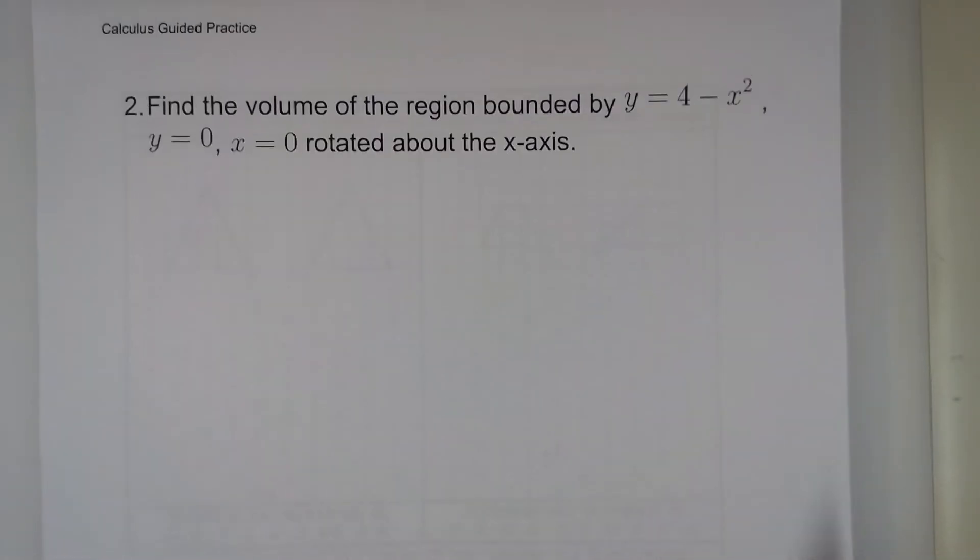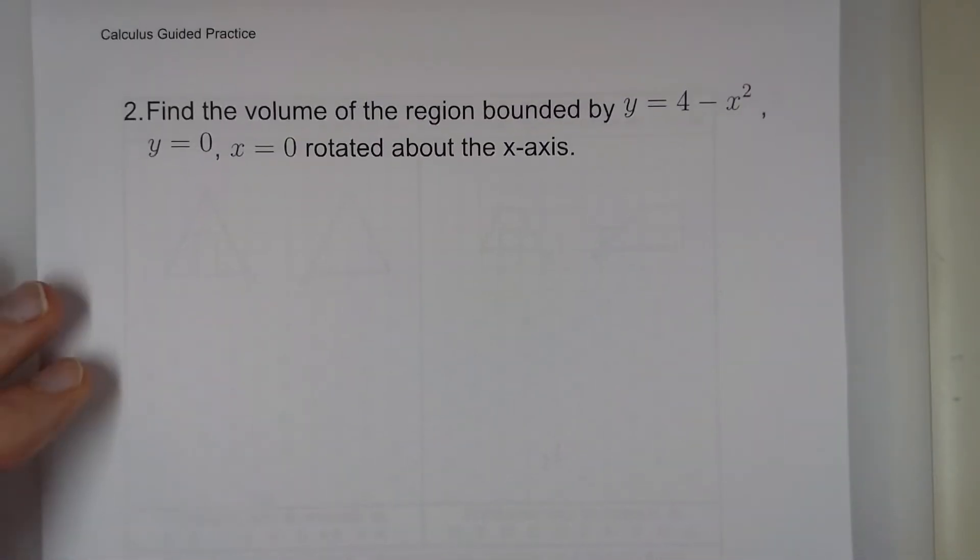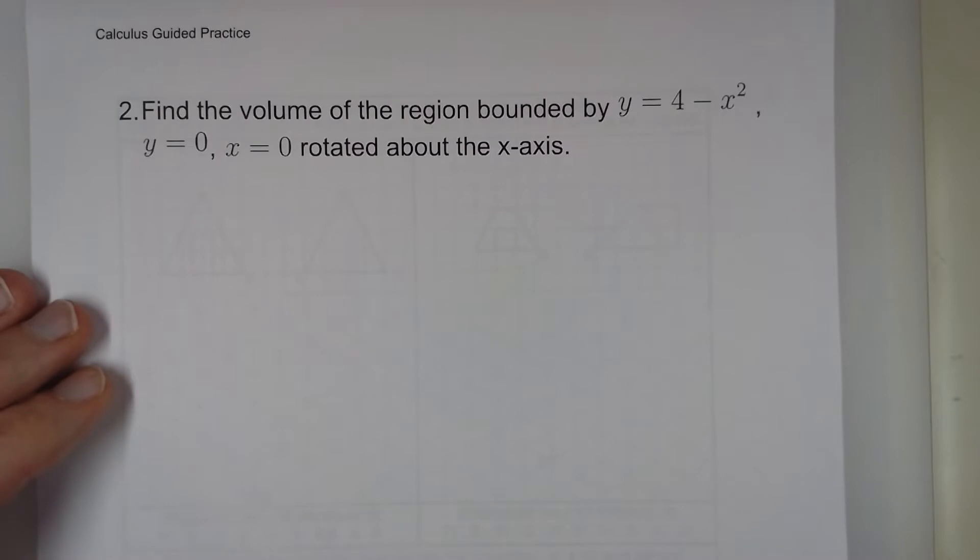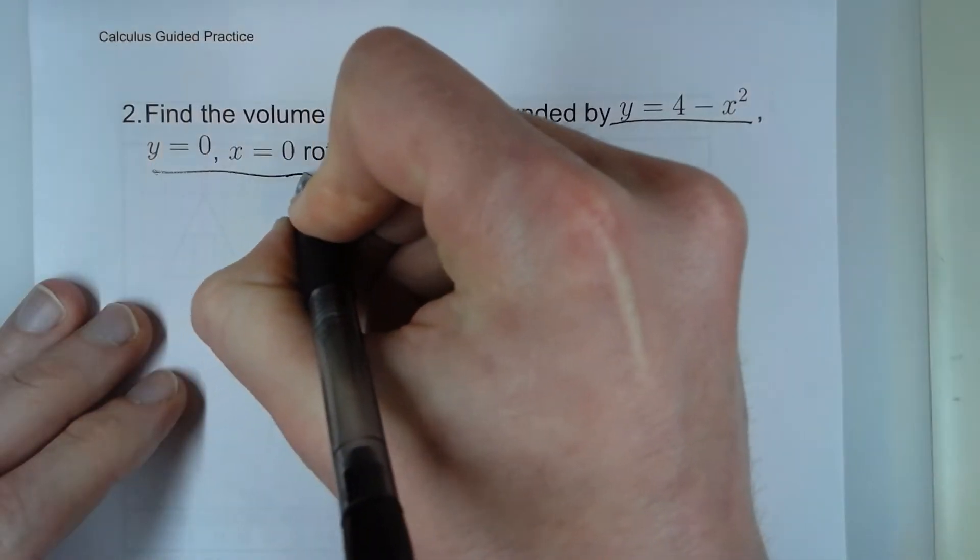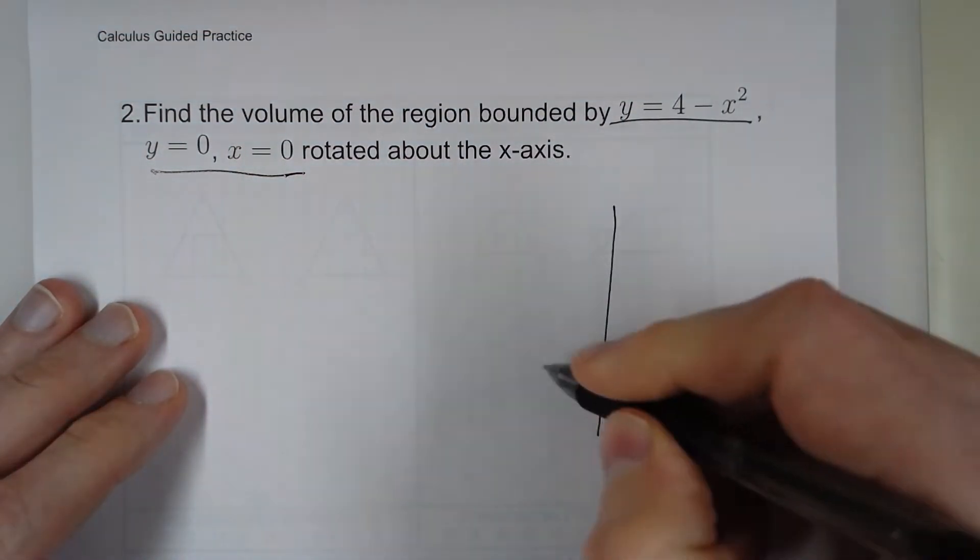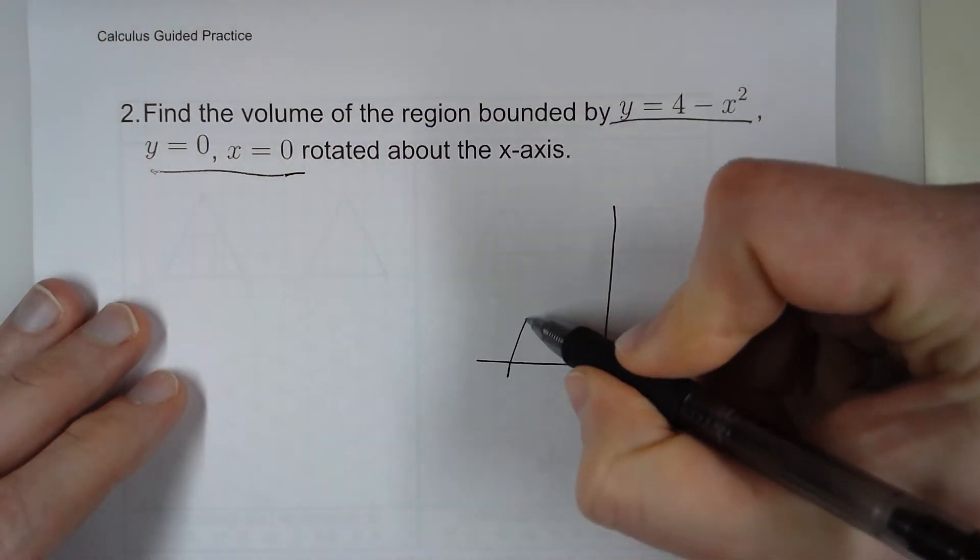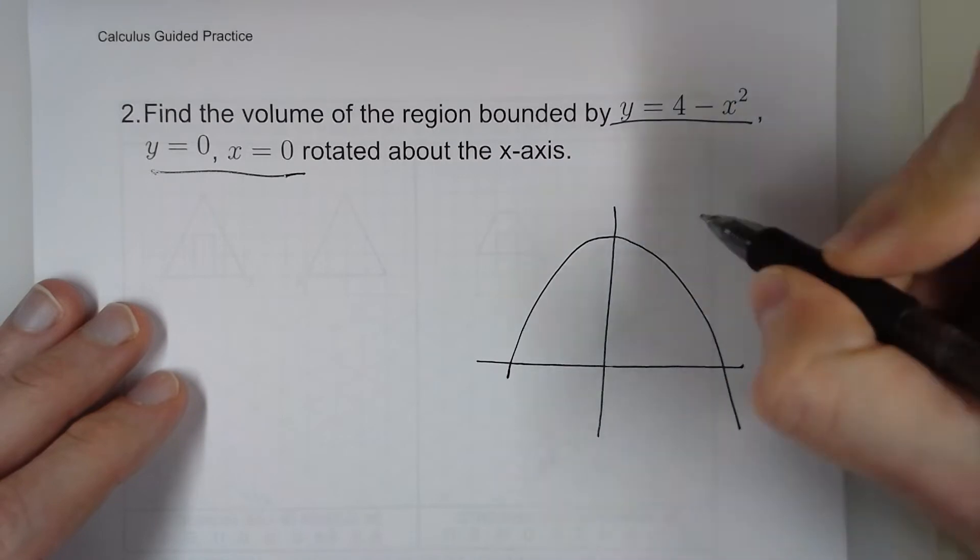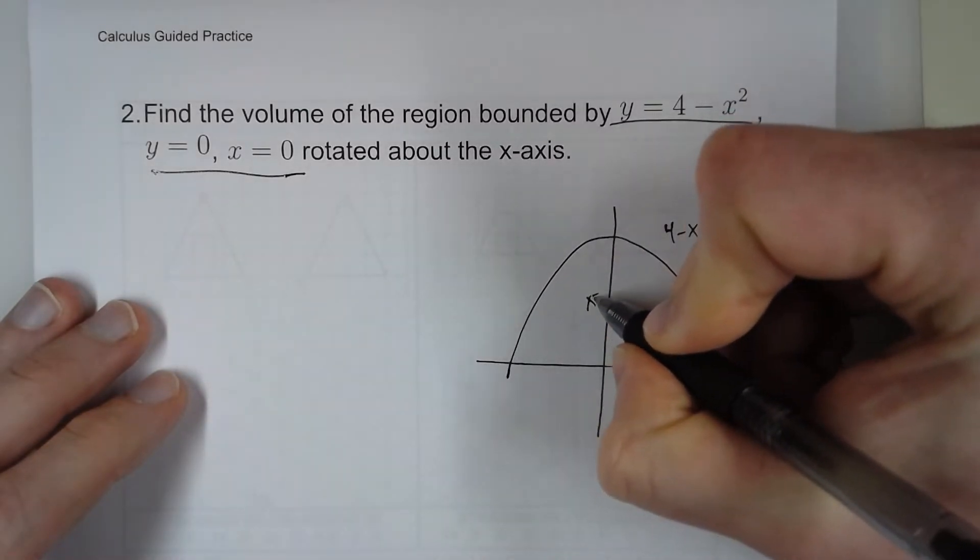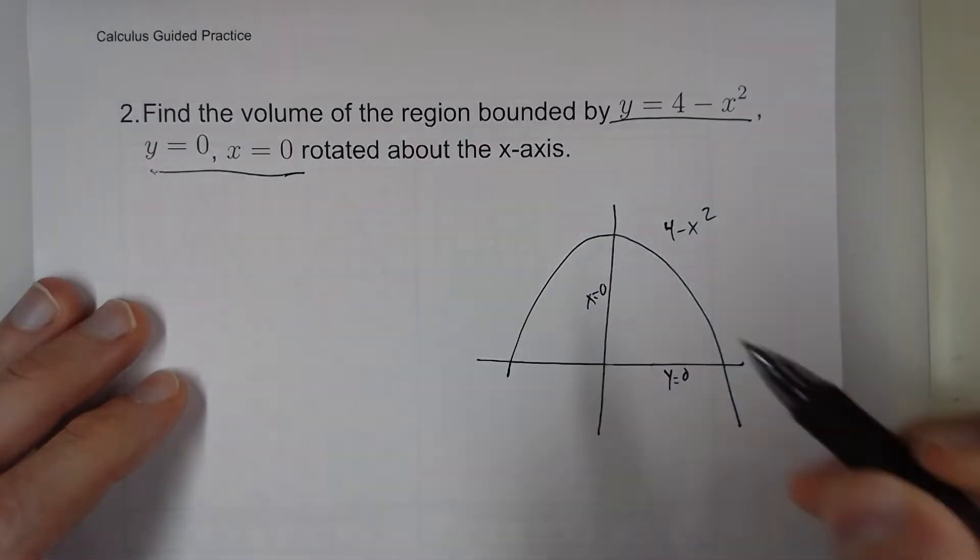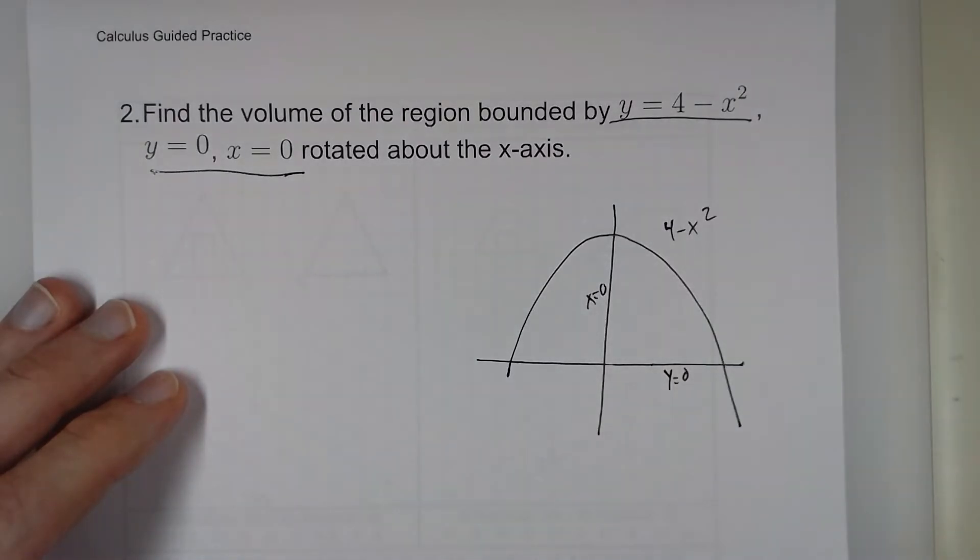So the next one. Here we have find the volume of the region bounded by 4 minus x squared, y equals 0, and x equals 0. So first, we have 4 minus x squared. Next, we have y equals 0. That's this. And then x equals 0. That's that. So we're talking about this region right here.